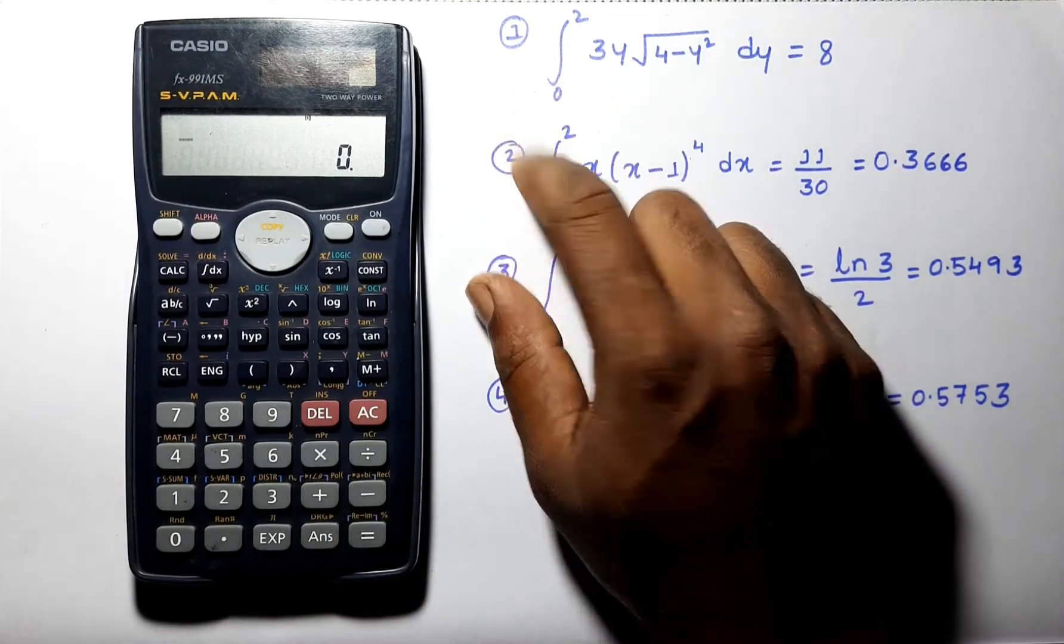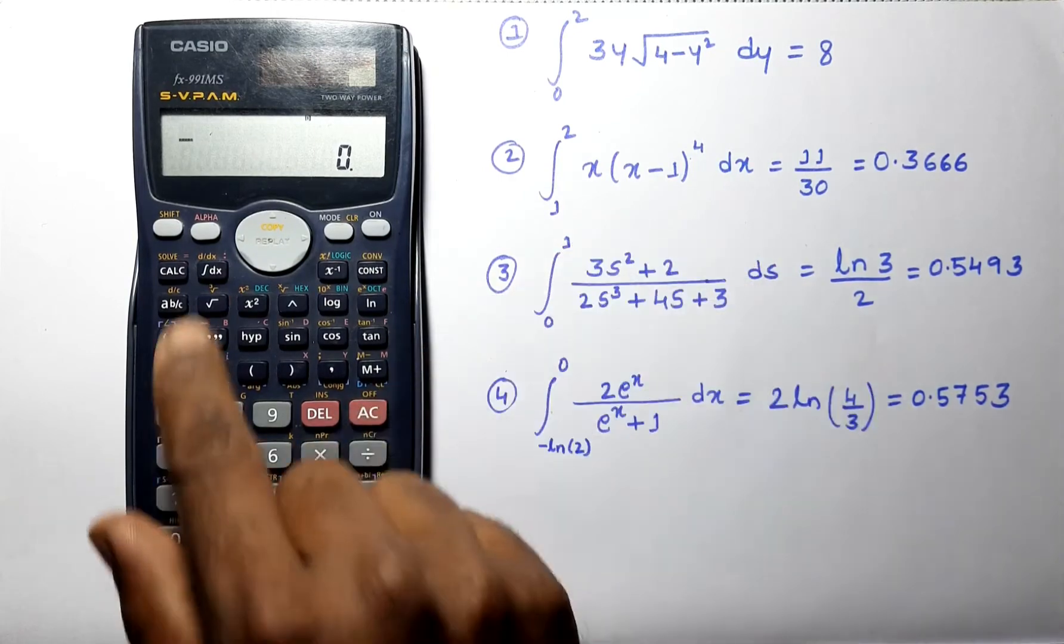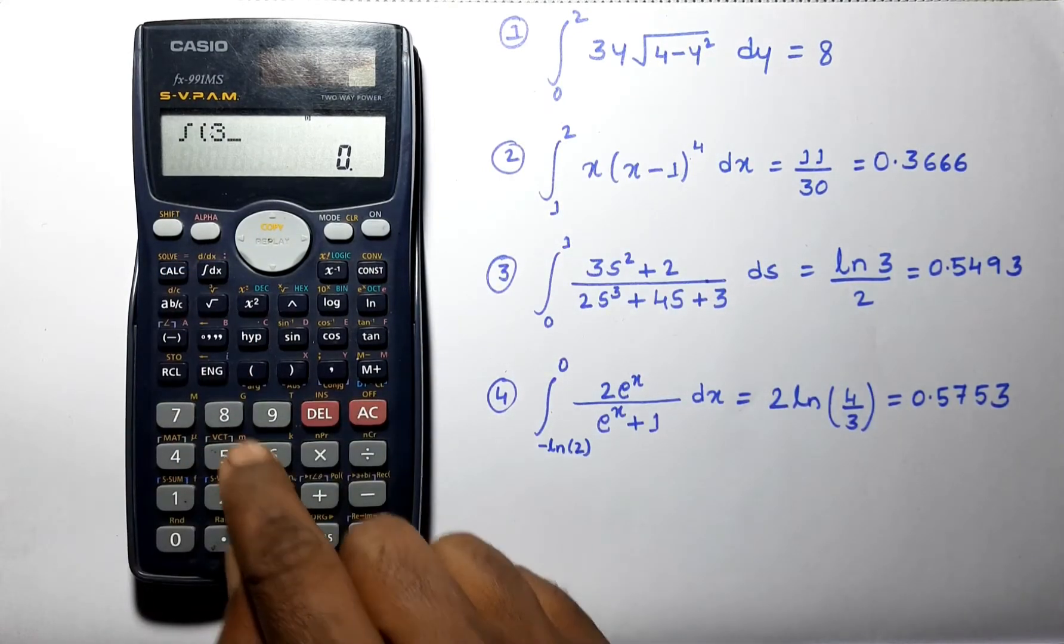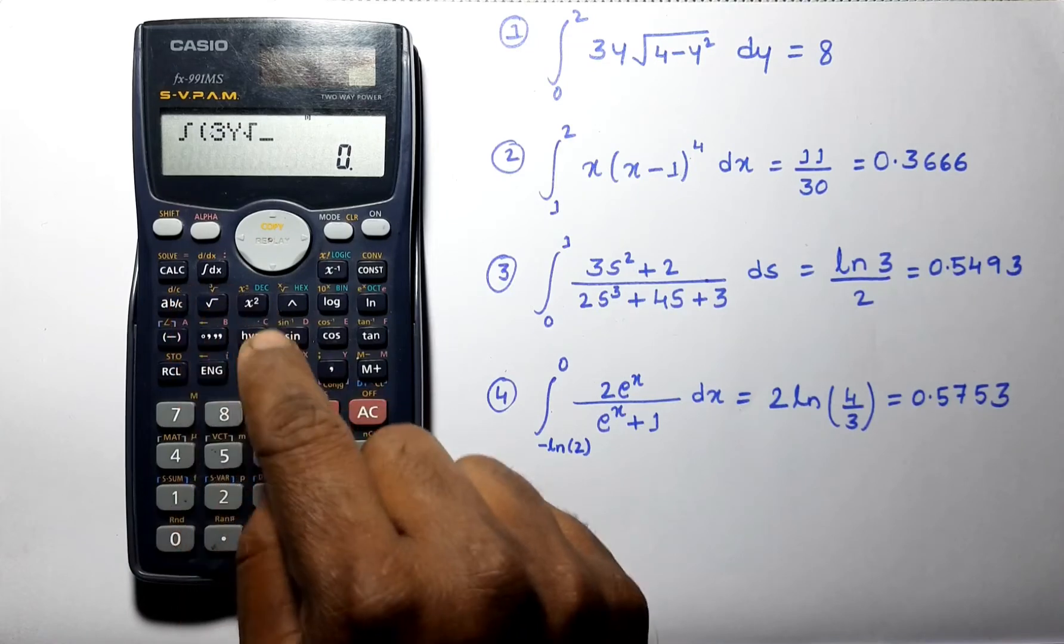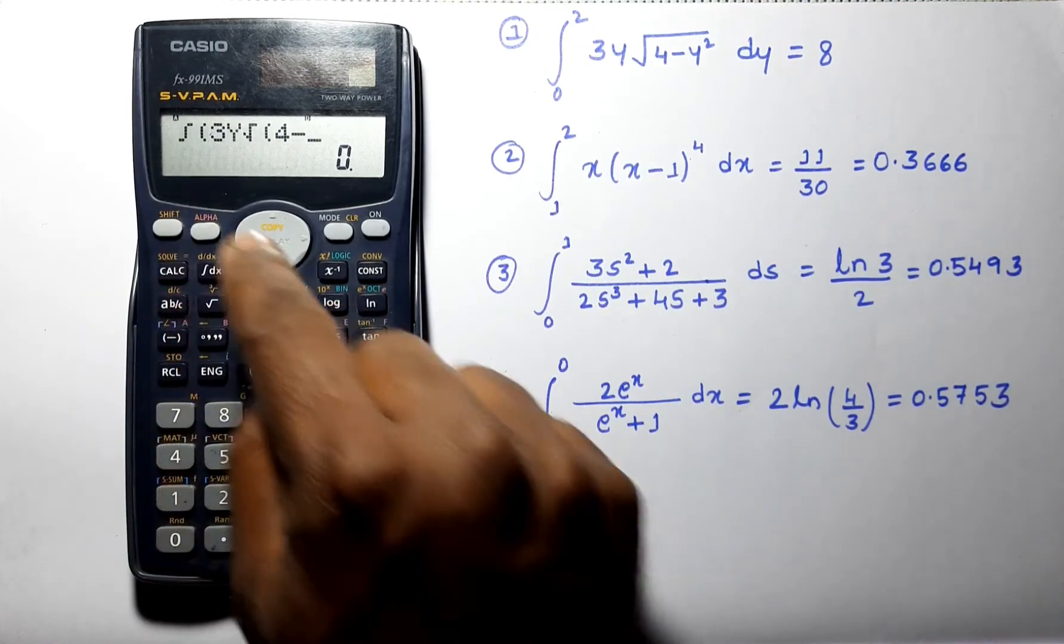Let's begin with the first problem. I will use this term as y here: 3y root over 4 minus y square.